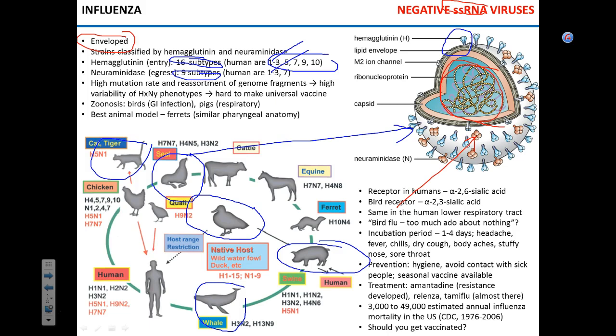That route of transmission from waterfowl to pigs and from pigs to humans provides new strains of influenza that cause outbreaks, pandemics, and so on. The story of 2009 — the swine flu outbreak — was exactly this route: from waterfowl to pigs, from pigs to humans. Can people acquire the virus directly from birds? Yes, we can, but there are certain restrictions involving the receptor that we'll discuss.